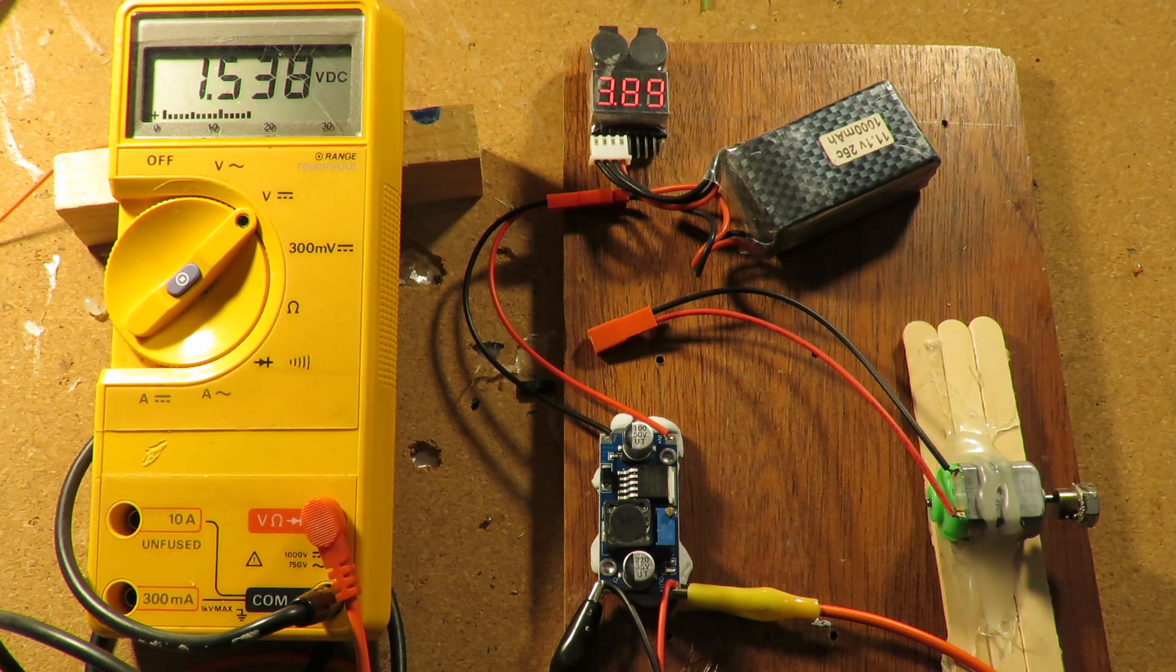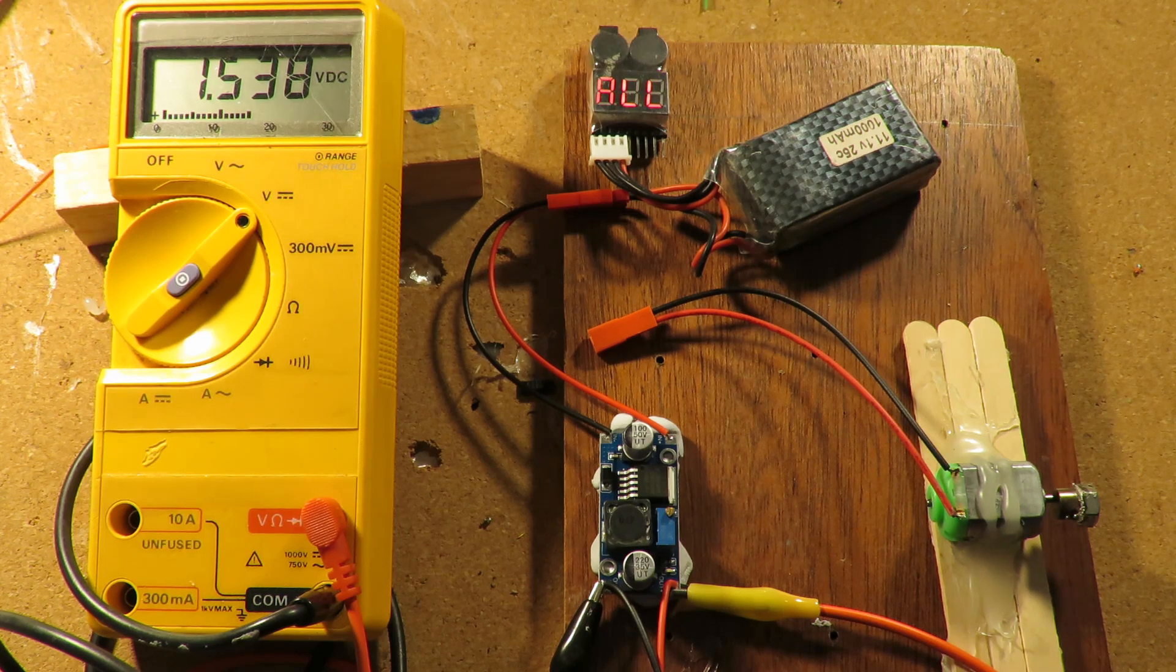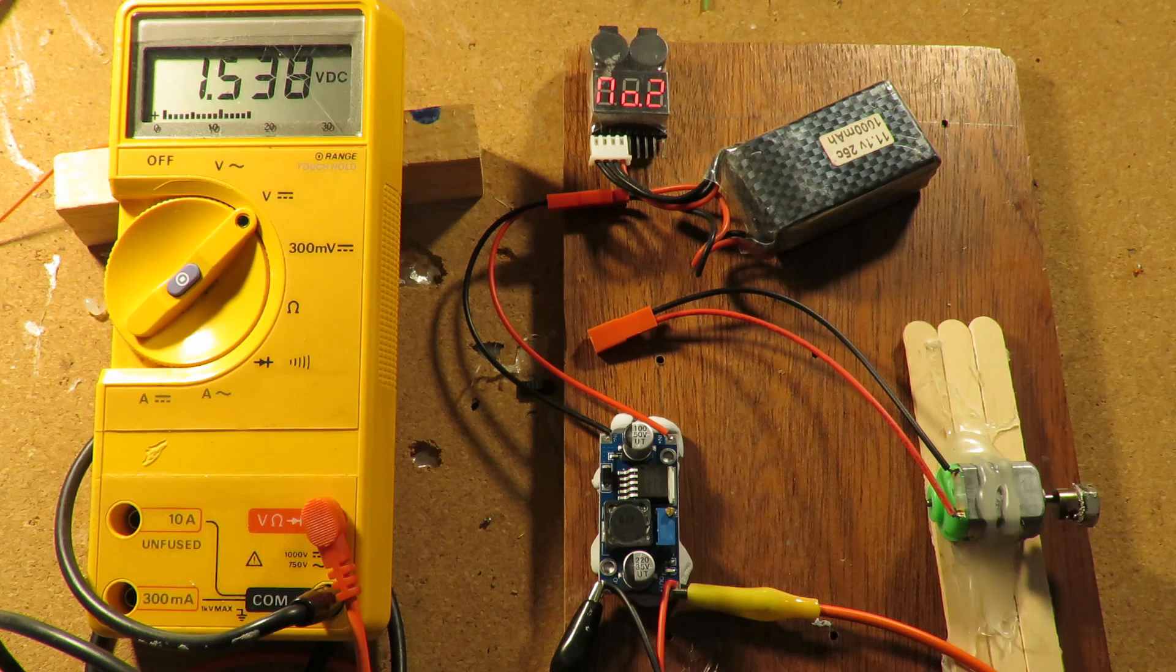Your LiPo batteries come in 3.7 volts, 7.4 volts, 11.1 volts, so they're not directly compatible with double A batteries.